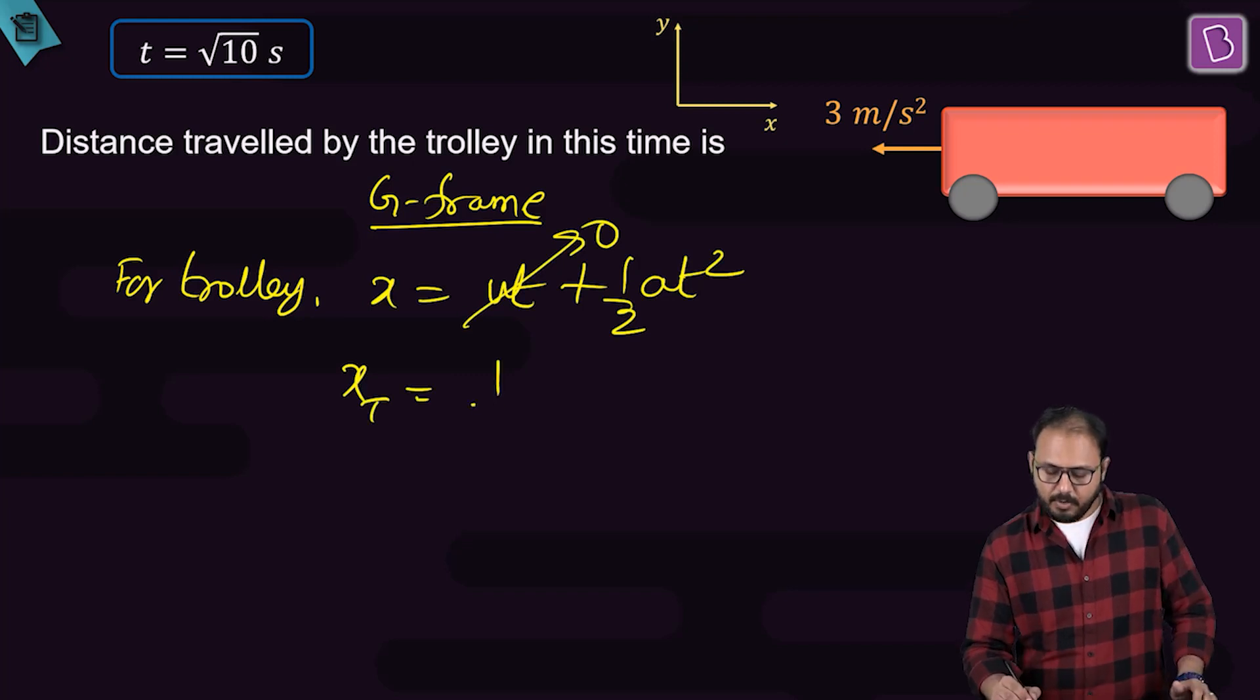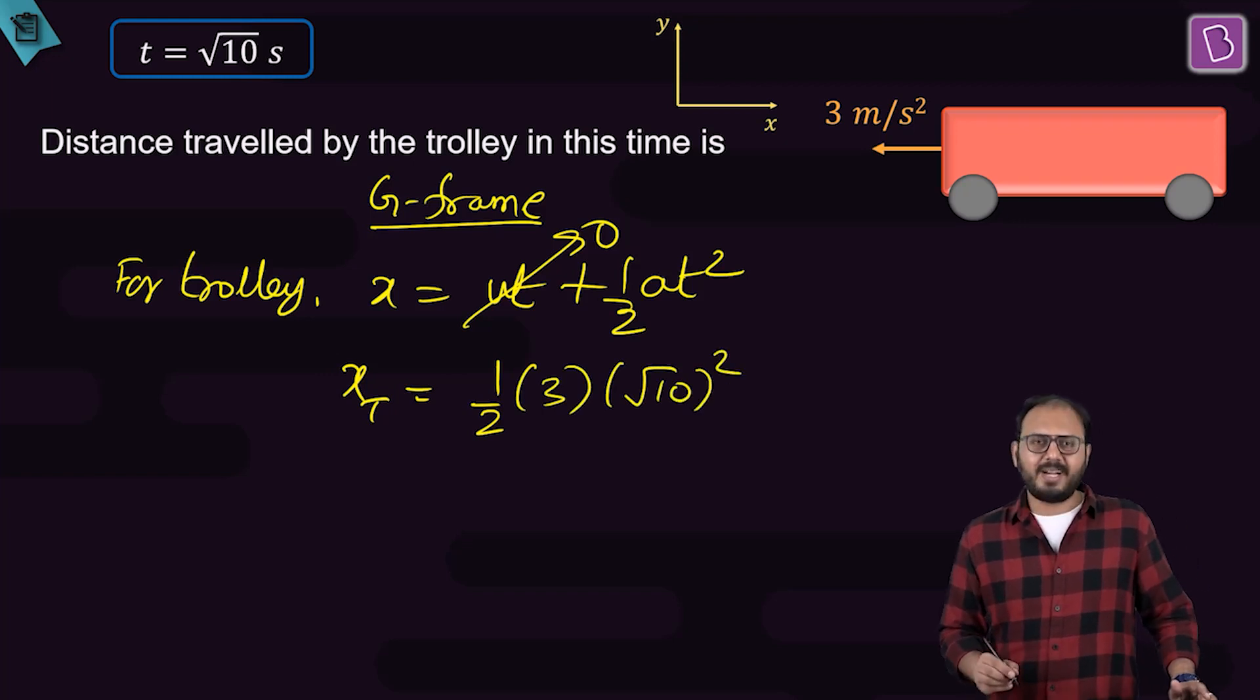What is the acceleration of trolley? 3. And what is the time? Root 10 square. What is root 10 square? 10.